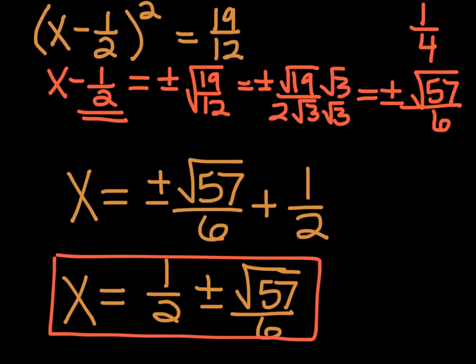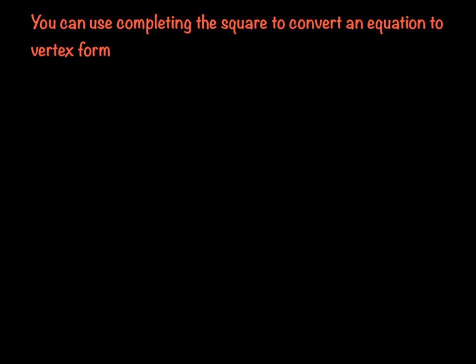Another thing completing the square is useful for is converting an equation from standard form to vertex form. You don't have to find the vertex separately — just complete the square and it will be in vertex form.